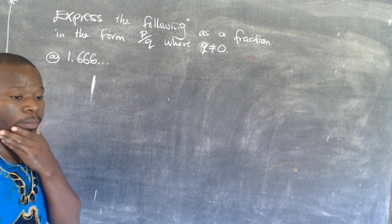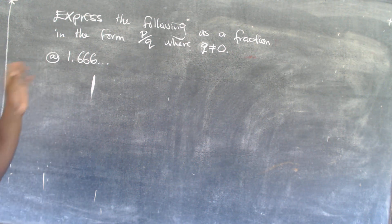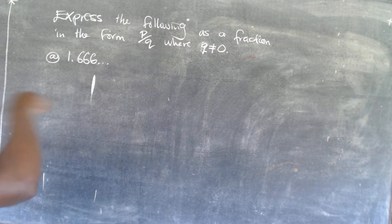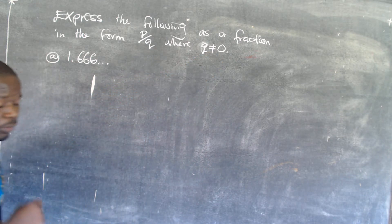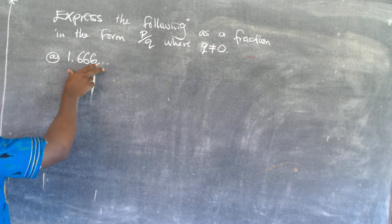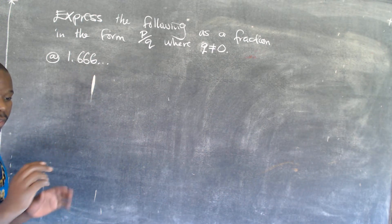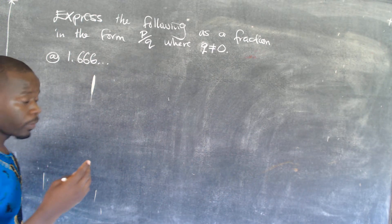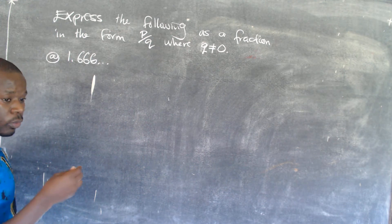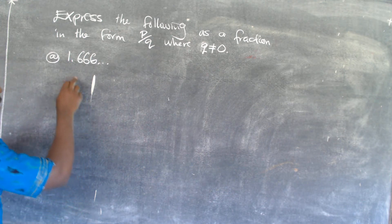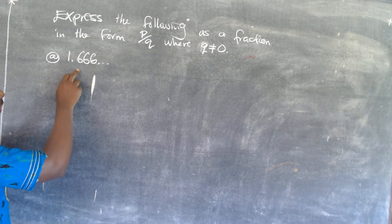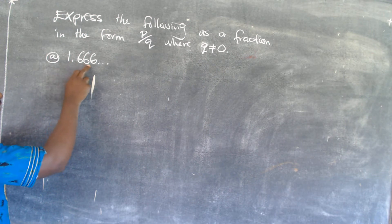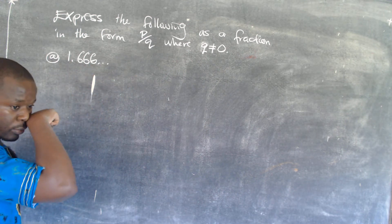There is a question that we are going about here. We want to express the following as a fraction P over Q, where Q is not equal to 0. When you are expressing this decimal to a fraction, you are supposed to follow two steps. We can write this one here — this means that this is 1.6666, with 6 repeating.